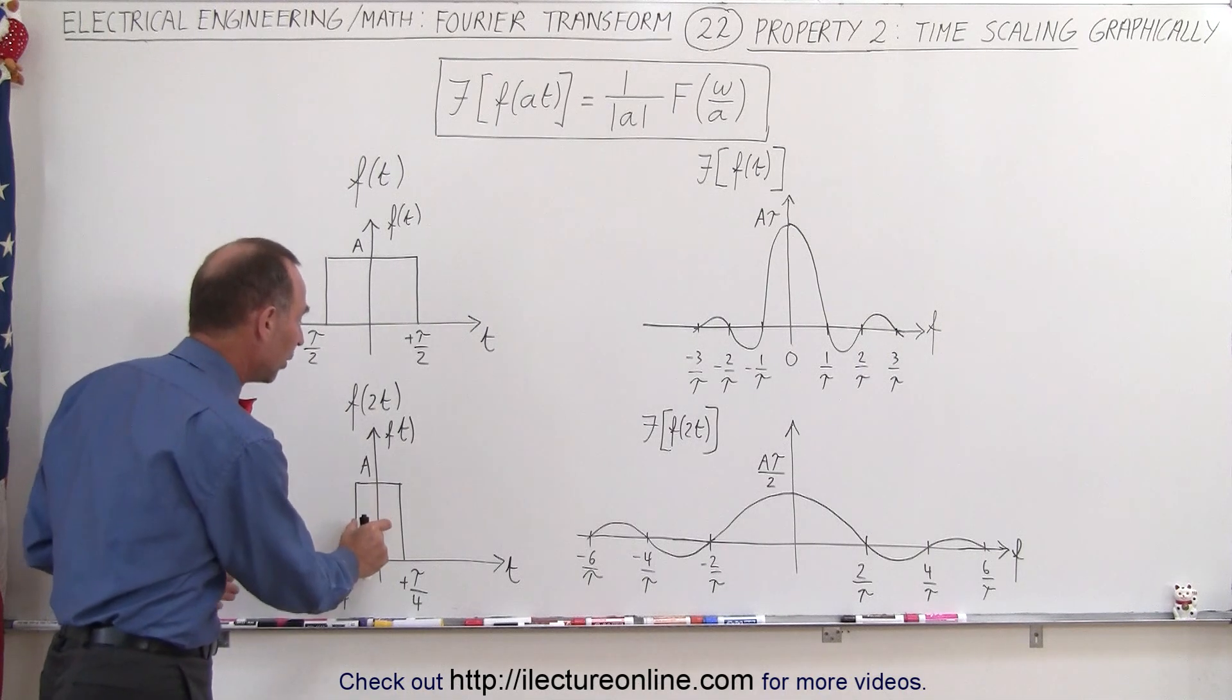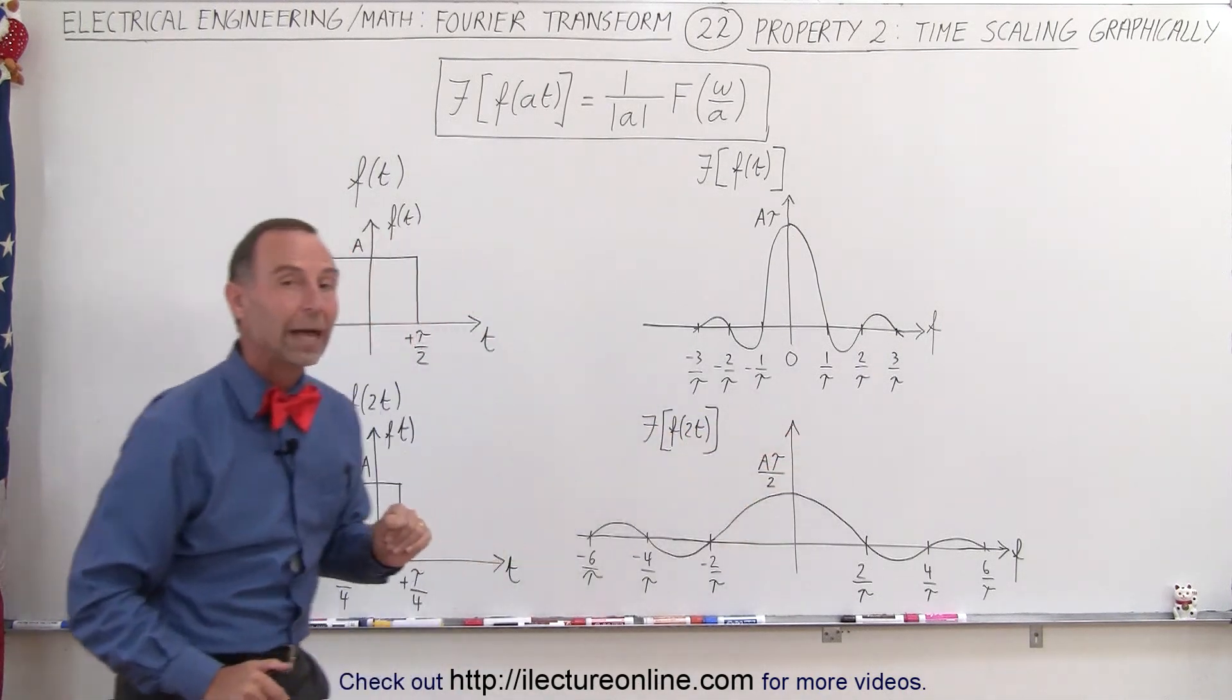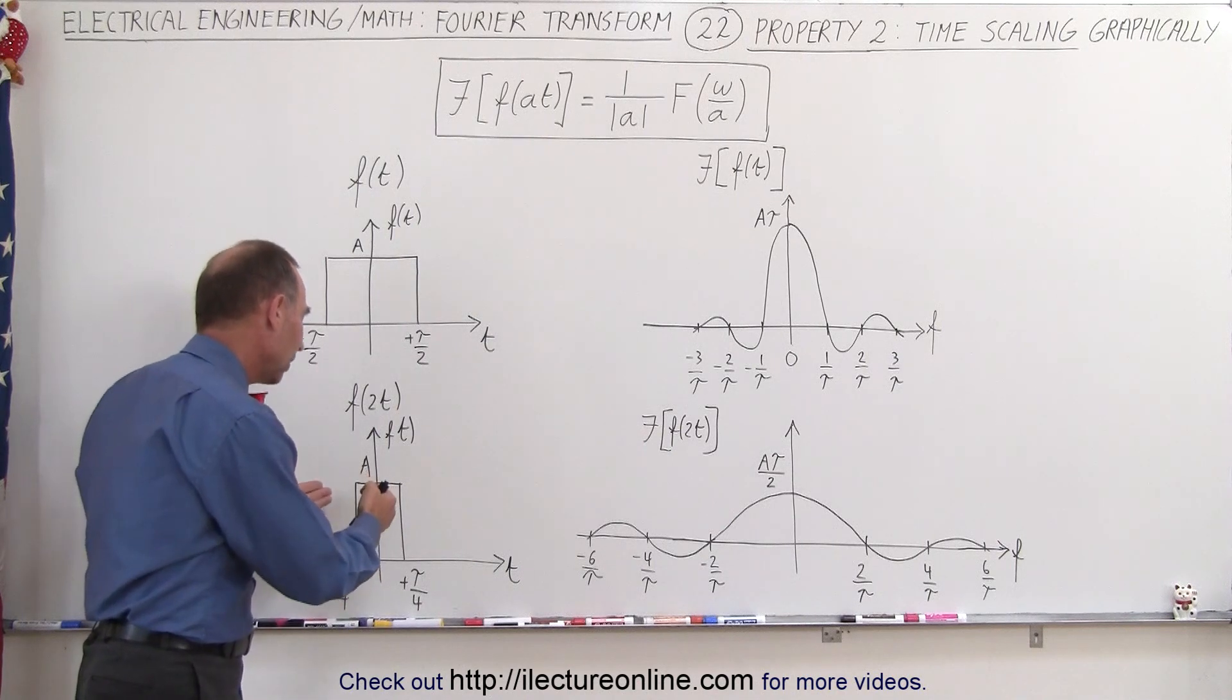The second effect is a shorter pulse will also cause the amplitude to go down. Basically, you get less of a signal.